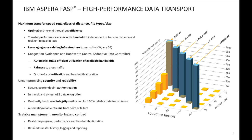I'm going to be very brief on this as it's covered in other videos, but the main thing that the IBM Aspera patented protocol — known as FASP, standing for Fast Adaptive and Secure Protocol — brings to the table is maximum transfer speed regardless of distance, data type, and size.